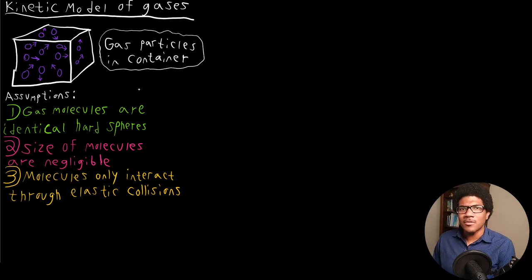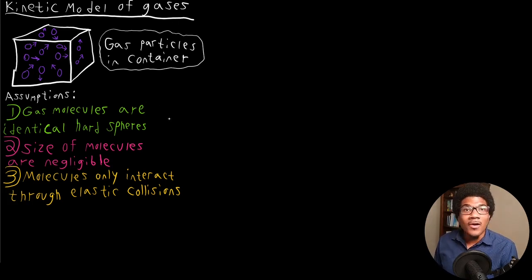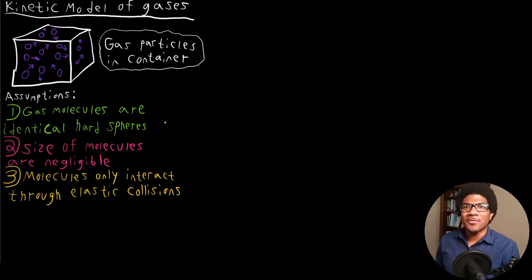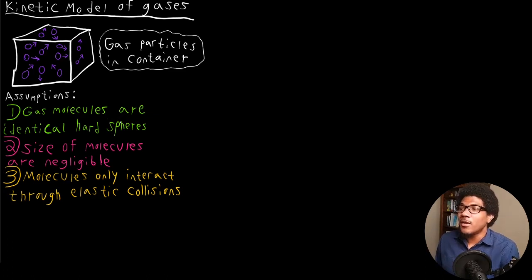The assumptions of this model are, one, that gas molecules are identical hard spheres. Obviously you know that is not true. Think of a gas like methane, CH₄, with its tetrahedral molecular shape — a sphere would actually be a very poor approximation to the shape of that gas particle. But we assume that these gas molecules are all identical hard spheres.